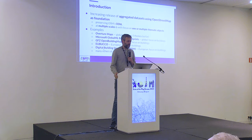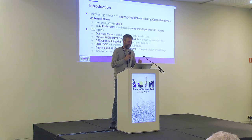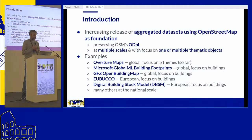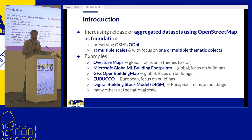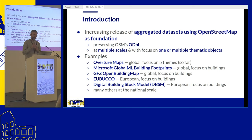There is an increasing release, especially in the last couple of years, of aggregated datasets that use or provide information about OpenStreetMap with different percentages of elements from OpenStreetMap. Usually they are preserving OSM or ODbL license, they are at multiple scales, and they focus on different thematic information. The biggest examples include Overture Maps — a global database with five themes released so far — and Microsoft Global ML Building Footprints, which is also global, though some areas are not covered.